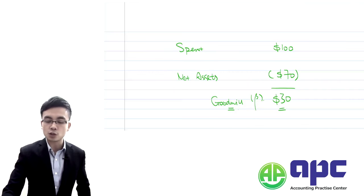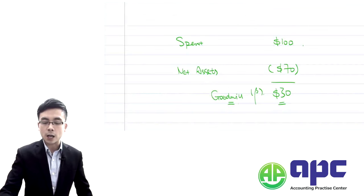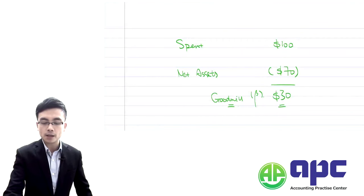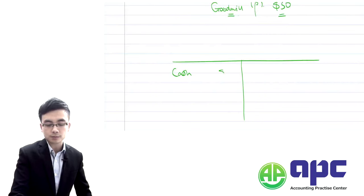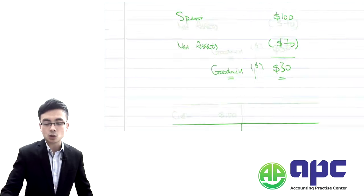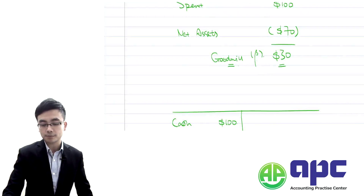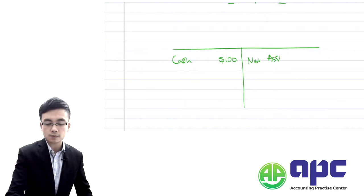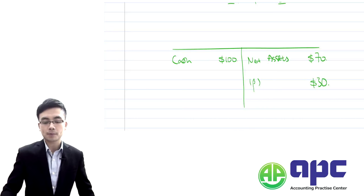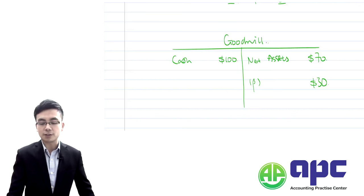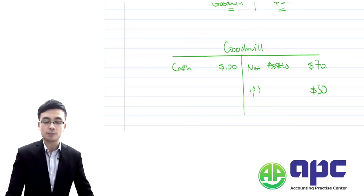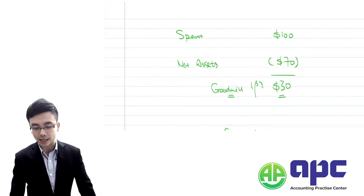In the T-account, you spent $100 of cash and their net asset was $70 when originally bought. The balancing figure is the Goodwill, which we put into the non-current assets within the consolidated SFP. That's the basic consolidation we need to refresh our minds on.